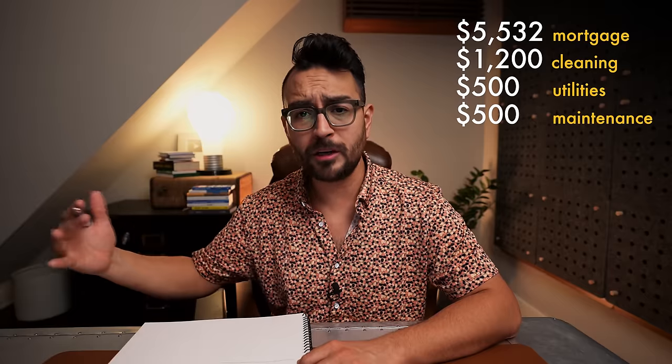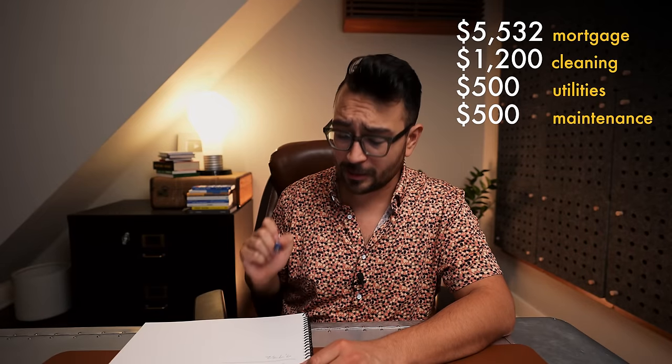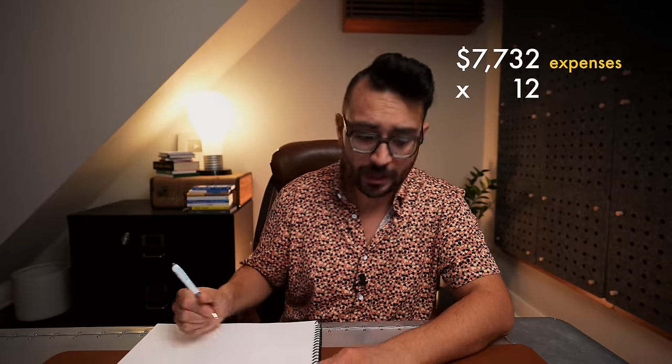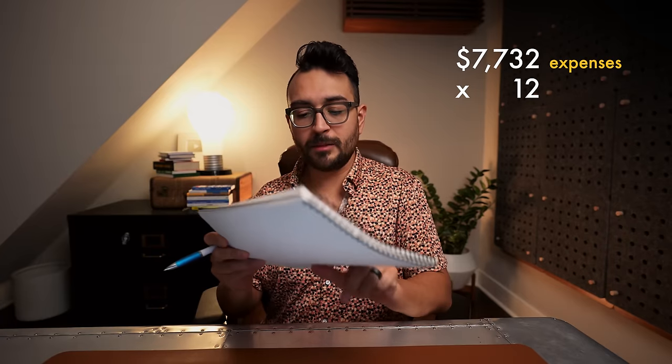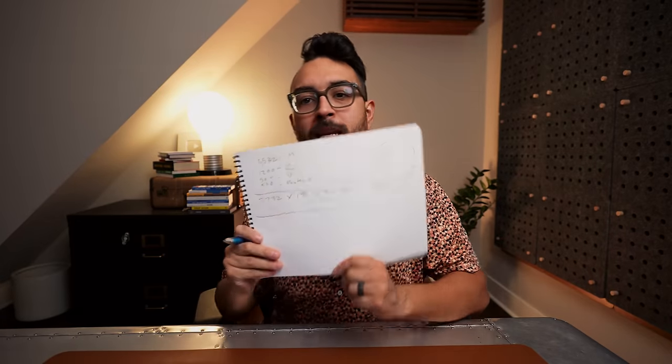This doesn't account for refunds, the Airbnb service fee, or CapEx — capital expenditures. But every single month I can expect to spend $7,732 in expenses. Multiply that by 12 and every single year I can expect to spend $92,784. So at a minimum, just to keep the lights on, we're looking at $93,000 to operate this Airbnb. That is layer number one.